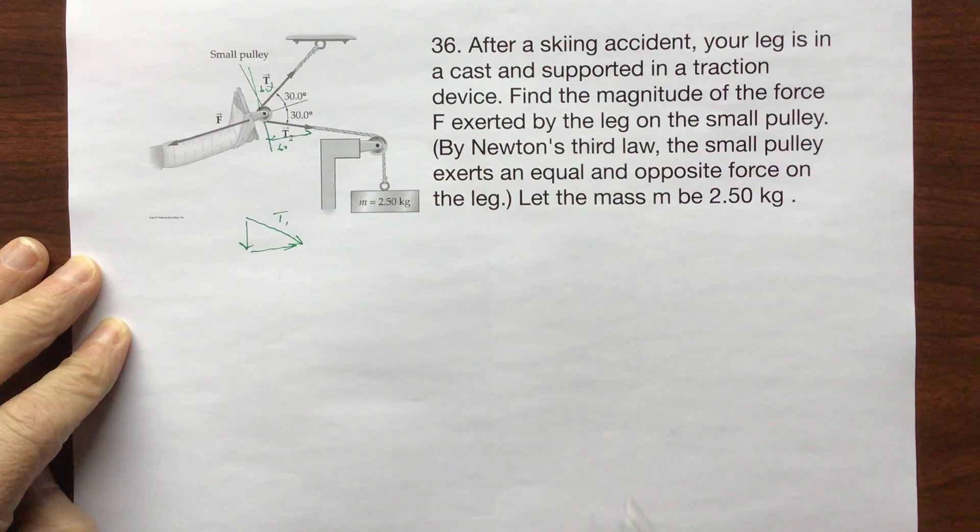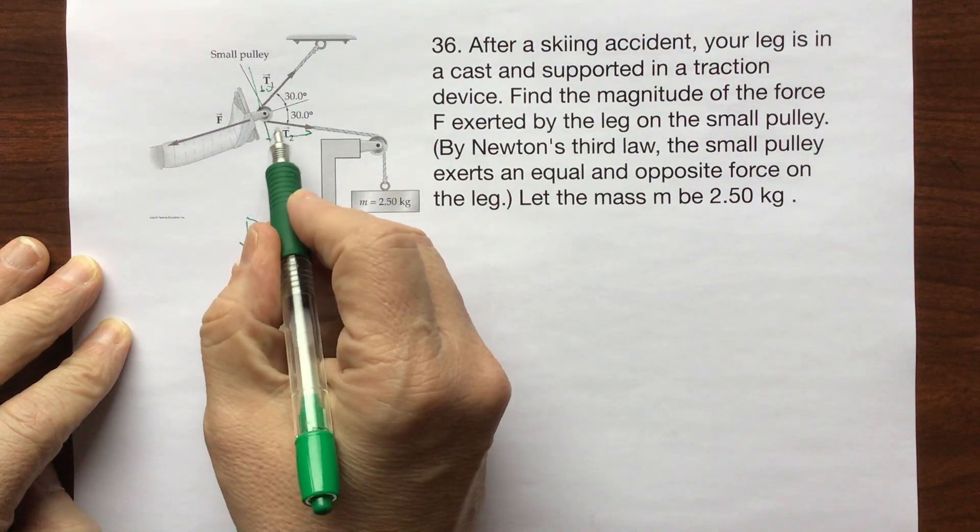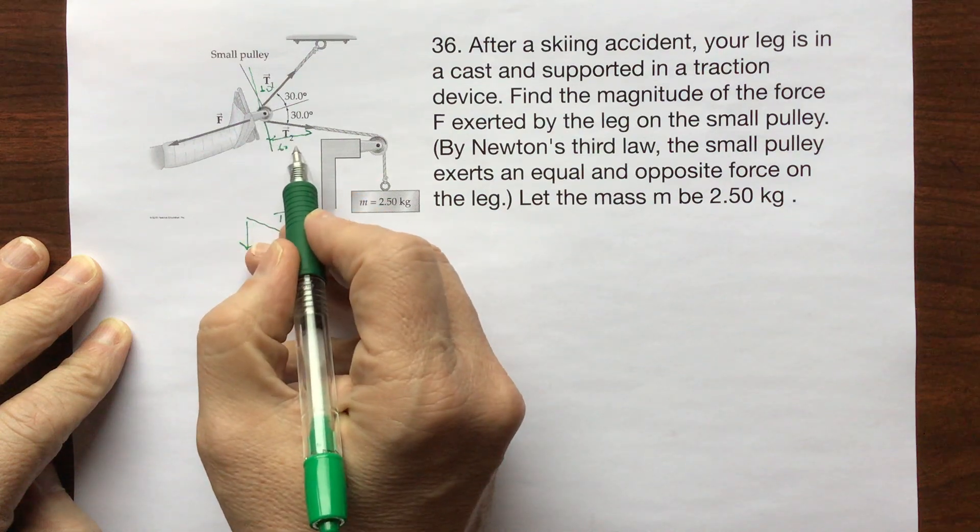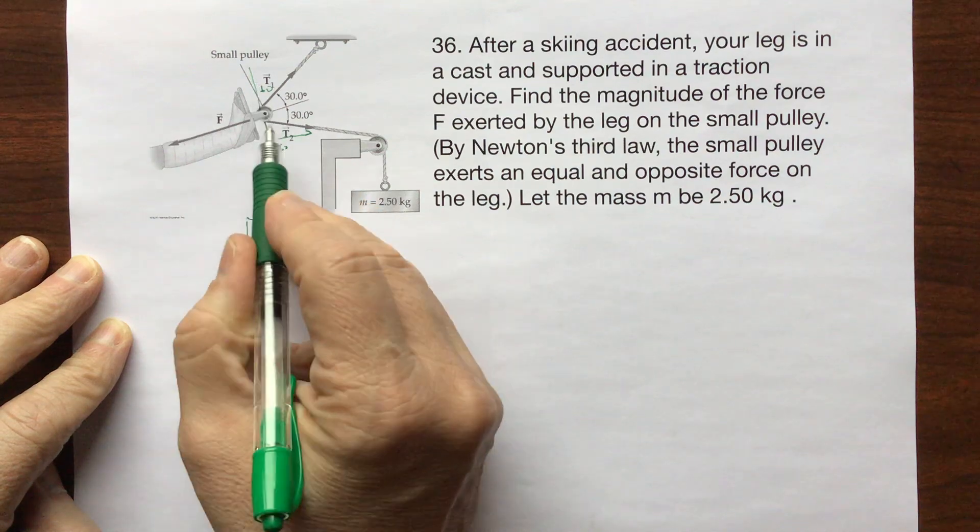So what cancels? Here is your angle 60. So this is going to be sine, this is going to be cosine. Cosine will cancel with each other.